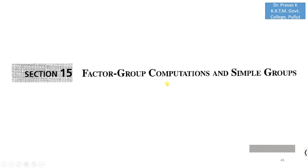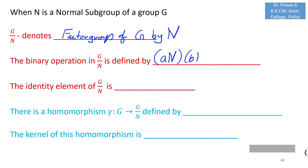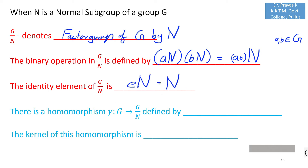Let us see section 15 on factor group computations and simple groups. We know that when N is a normal subgroup of G, G over N denotes the factor group of G by N. The binary operation is defined by aN times bN equals abN, where a and b are elements of G. The identity element is eN, also denoted N. There is a homomorphism γ from G to G over N defined by γ(g) = gN, and the kernel of this homomorphism is N.